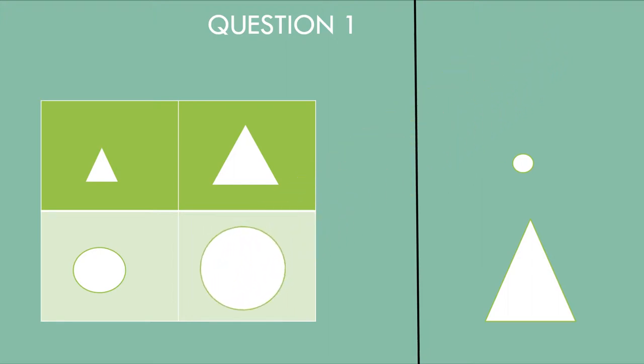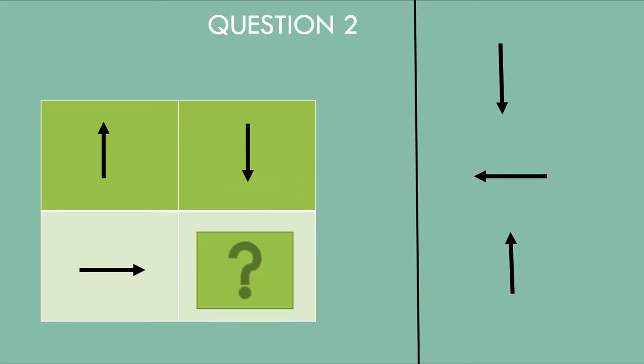Next question. We have an up arrow and a down arrow — they are in opposite directions. Up side pointing, down arrow. On the right side there is a right-pointing arrow. Is it the opposite? Yes. So the answer is a left side pointing arrow.